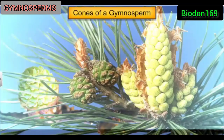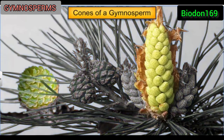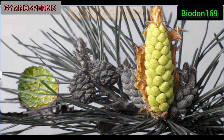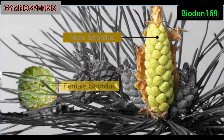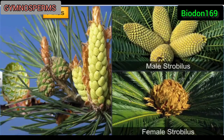The reproductive structure of a gymnosperm is called a strobilus, or a cone. Gymnosperms have both male and female strobuli. Interestingly, the strobuli may be borne on the same tree, as seen in Pinus, or on different trees, as seen in Cycas.